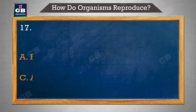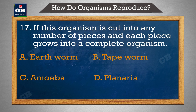If this organism is cut into any number of pieces, each piece grows into a complete organism — yadi yah organism kisi bhi sankhya mein kata jata hai aur each piece ek complete organism mein badhta hai. A. Flatworm, B. Tapeworm, C. Amoeba, D. Planaria.